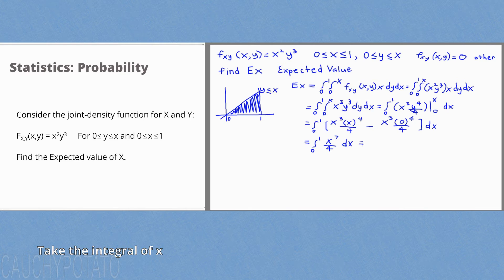Just like the previous, add 1 to the power, so 7 plus 1 is 8, then multiply the denominator with 8. So it's x to the eighth over 4 times 8.